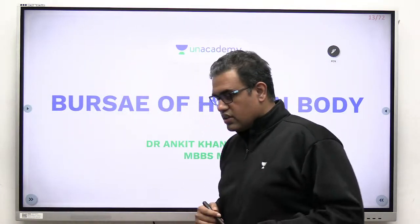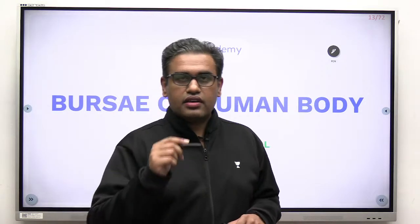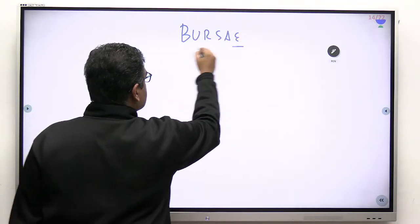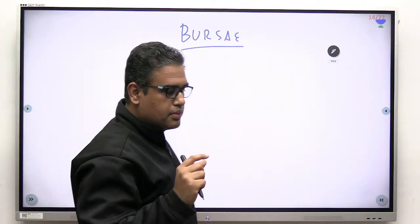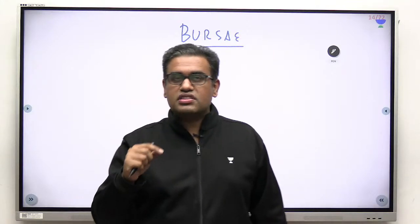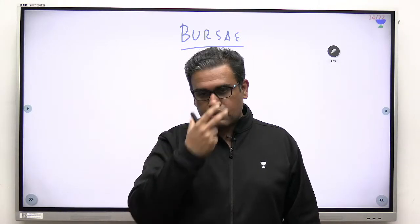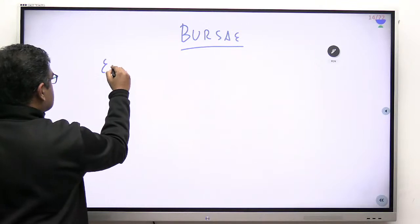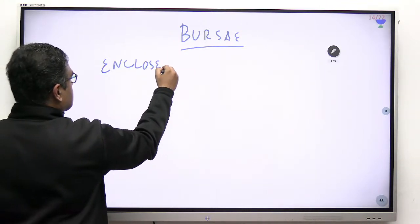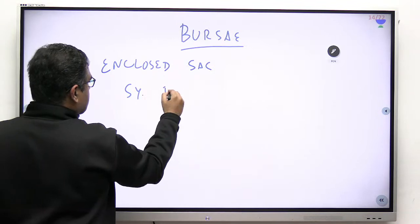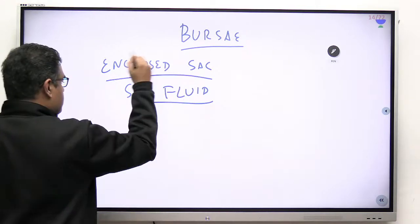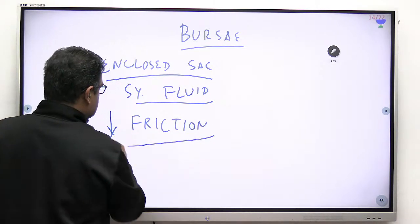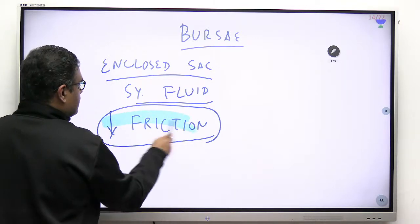The topic, as you can see, is the bursas of the human body. Let's start this very interesting topic. First of all, we should know what we are dealing with — what is a bursa? A bursa is a closed sac lined by a synovial membrane from inside, which secretes synovial fluid. Its main purpose is to reduce friction. That is the main purpose of a bursa.